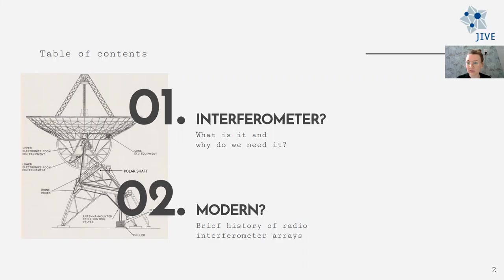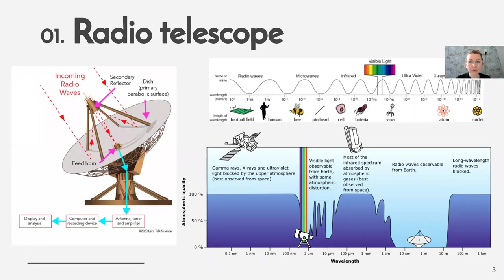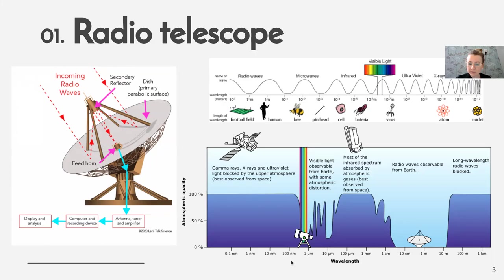Let's start with the first question: what's the interferometer? To describe it, I'd like to start with what's a radio telescope — like a single antenna. I'm going to talk about radio arrays, so radio wavelengths. Here on this diagram, you can see that radio wavelengths is actually the only part of the spectrum where we have a nice and pretty wide window to observe the universe. The window with visible light is much smaller and still affected by atmosphere. With radio waves, we still have some effect of atmosphere, but they are much more reduced.